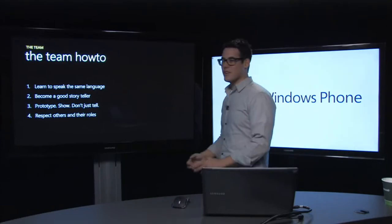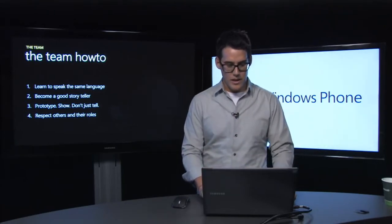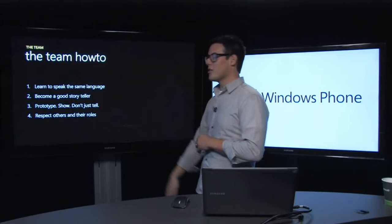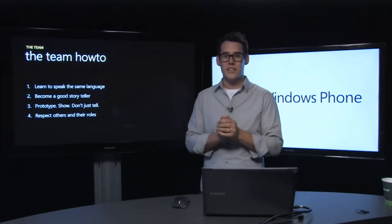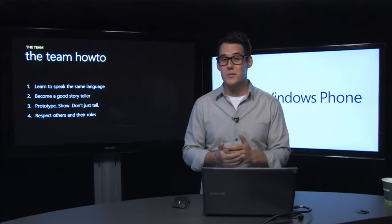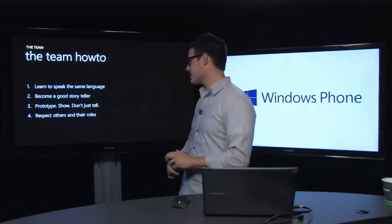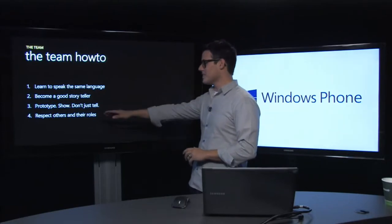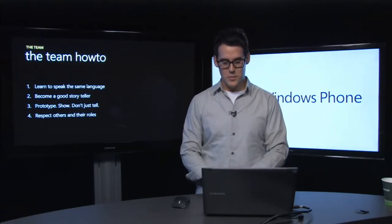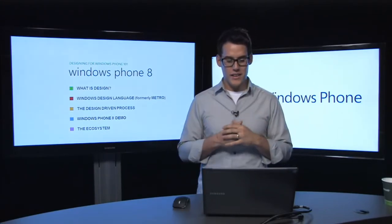Become a good storyteller: shoot a video, make storyboards, act it out if you have to — tell the original goal of what you want your feature to be like. Prototype and show, don't just tell. There have been so many times I've worked on features for apps or the OS where it felt like people were not on board, like the feature was going to get cut. But as soon as we built a little prototype where we could show people what it would look like when they held it in their hands, the idea went straight to the top and everyone was excited about it. And last but not least, it doesn't need to be said — respect others and their roles. Sometimes you work with people who have very different roles and personalities. Try to respect them. That wraps up the design-driven process and how to create things led by design.